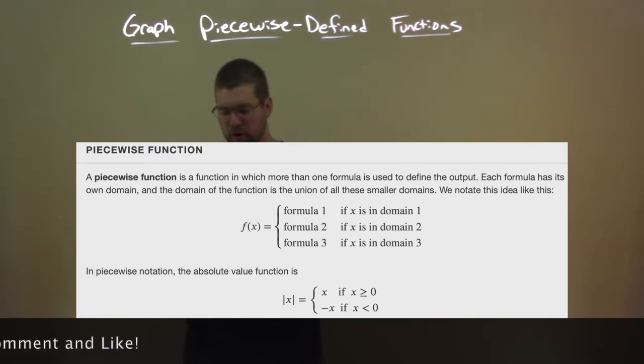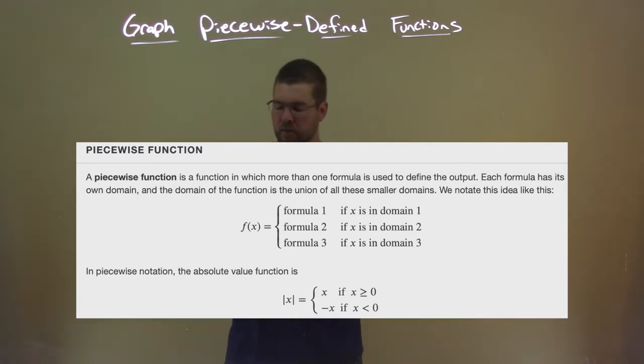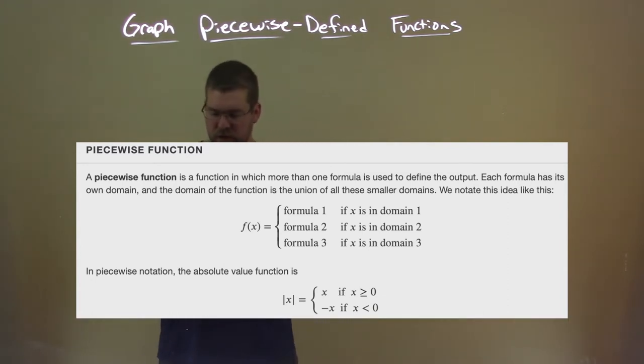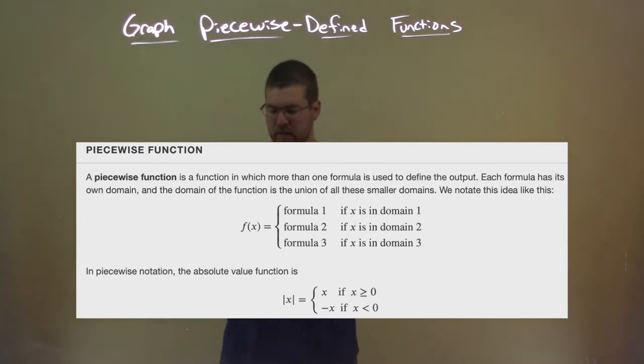f of x is equal to, a little curly bracket, formula 1 if x is in domain 1, formula 2 if x is in domain 2, formula 3 if x is in domain 3. In piecewise notation, the absolute value function is, absolute value of x is equal to, curly bracket, x if x is greater than or equal to 0, negative x if x is less than 0.